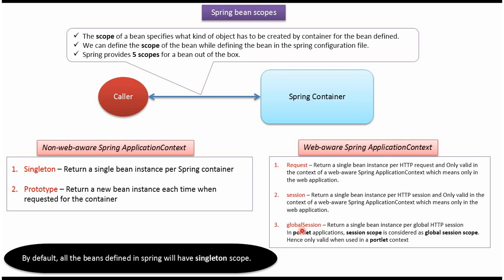Global Session scope returns a single bean instance per global HTTP session. In a Portlet application, session scope is considered as global session scope. So global session scope is only valid when used in a Portlet context.